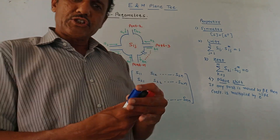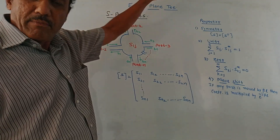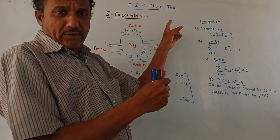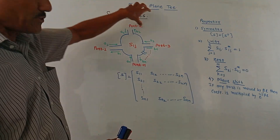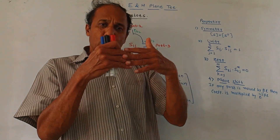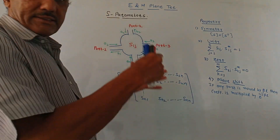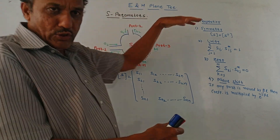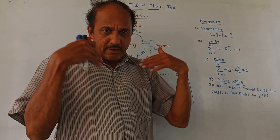Hello and welcome back to this channel. Dear students, this topic is E and H plane microwave T. Before starting E and H plane, we should know one more concept: the scattering parameter, which is the S parameter. From the exam point of view, you may expect questions like: what are S parameters, list out its properties, or what is the need of S parameters at microwave frequency, because these S parameters are applicable for the remaining entire unit.